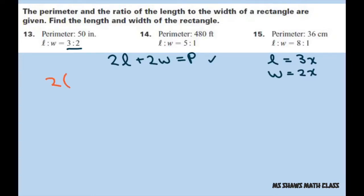We have 2 times 3x plus 2 times 2x equals 50 inches. So you multiply to get 6x plus 4x equals 50. Combine like terms and divide both sides by 10, and you get x equals 5.